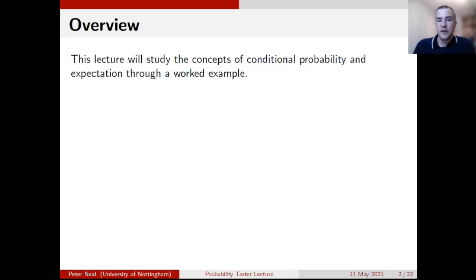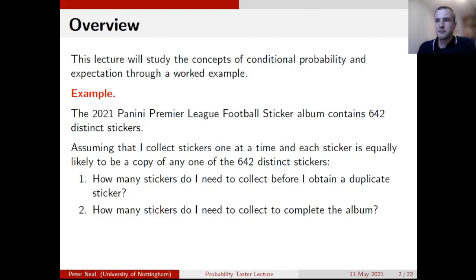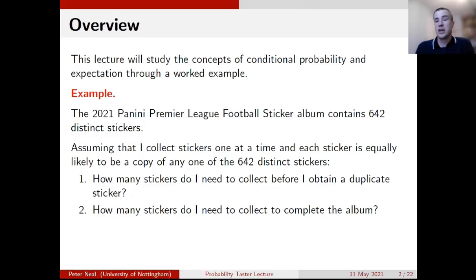A number of these ideas, if you've done any A-level statistics and probability, might be familiar to you. So what's going to motivate what we go through? I'm a football fan and have many times looked at collecting football stickers. The current Panini Premier League football album contains 642 distinct stickers. If I was to collect one sticker at a time, how many stickers do I need to collect before I obtain a duplicate? And the second question is: how many stickers do I need to collect in order to complete the whole album — all 642 distinct stickers?